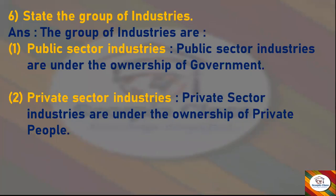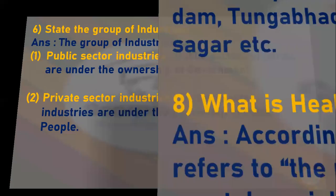Next question: State the group of industries. Answer: The groups of industries are public sector industries and private sector industries. Public sector industries are under the ownership of the government, whereas private sector industries are under the ownership of private people.